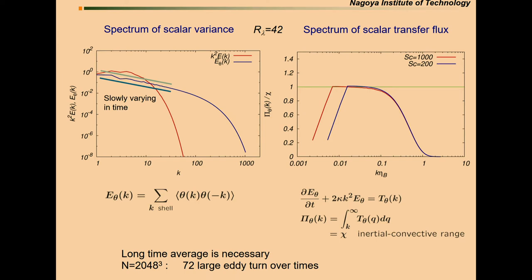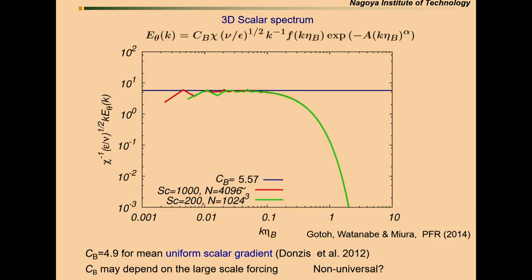This is the spectra, the scalar spectra, and this is the normalized scalar transfer flux. As you can see, over one decade of wave number, the curve stays almost one.